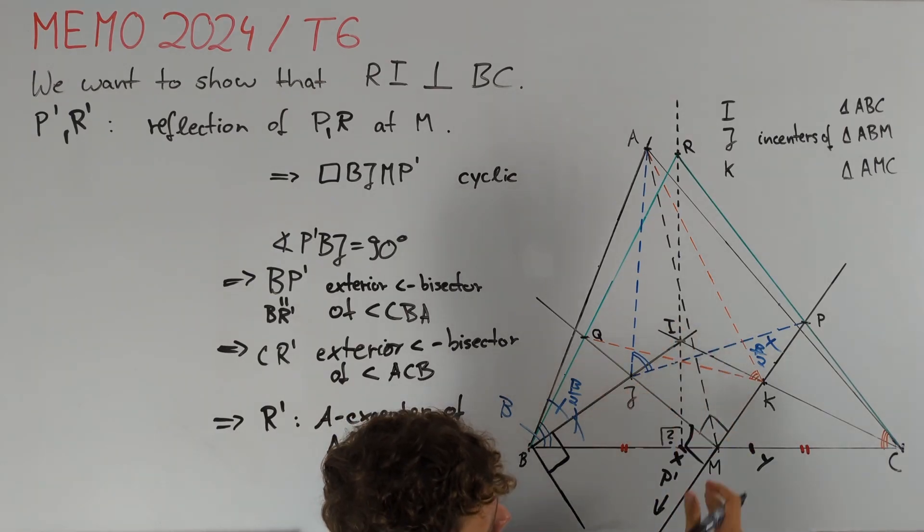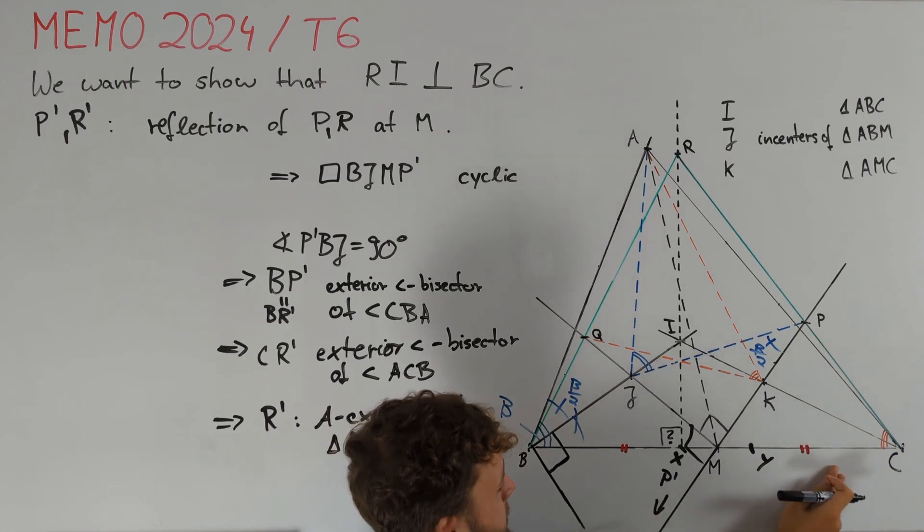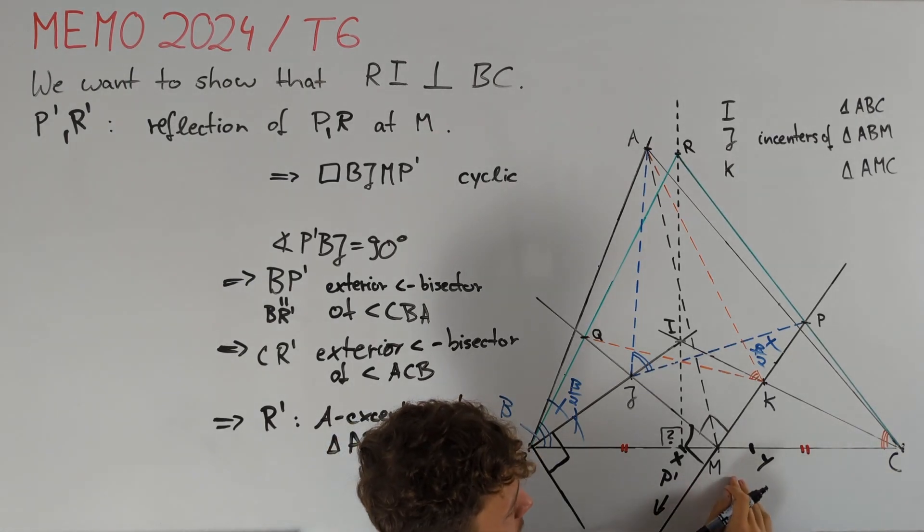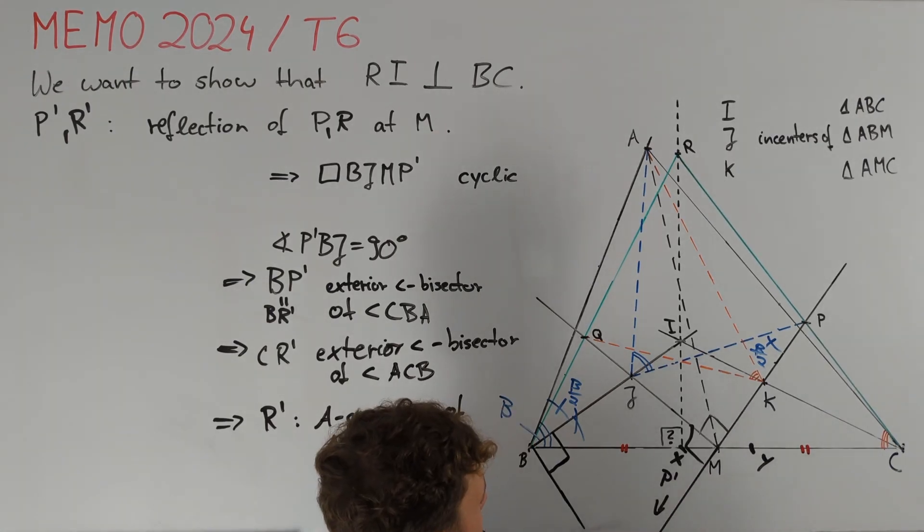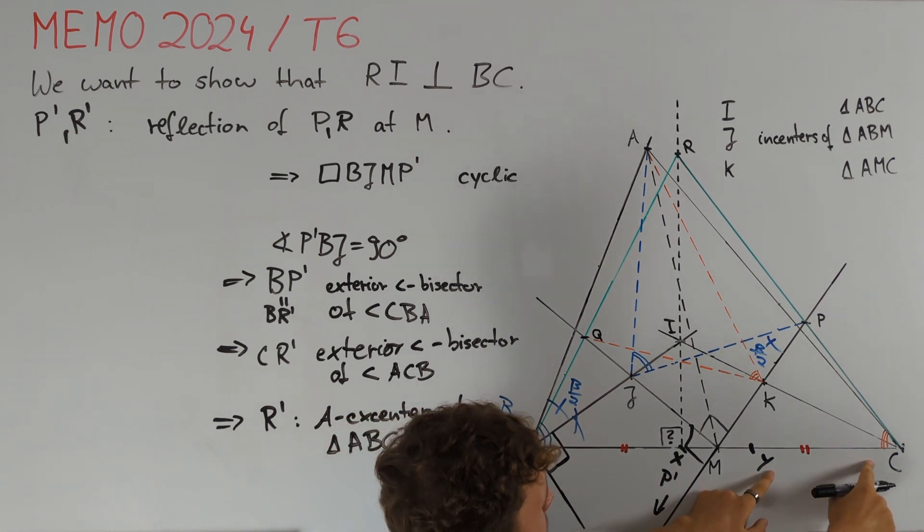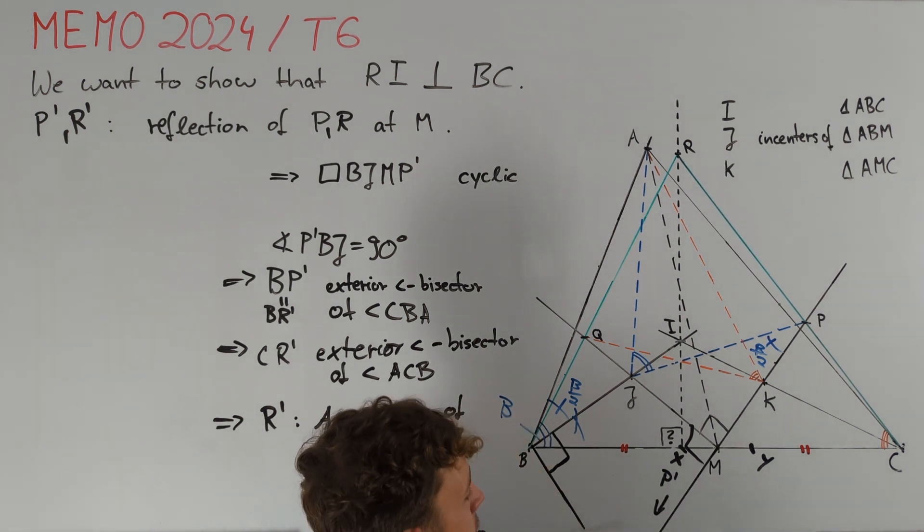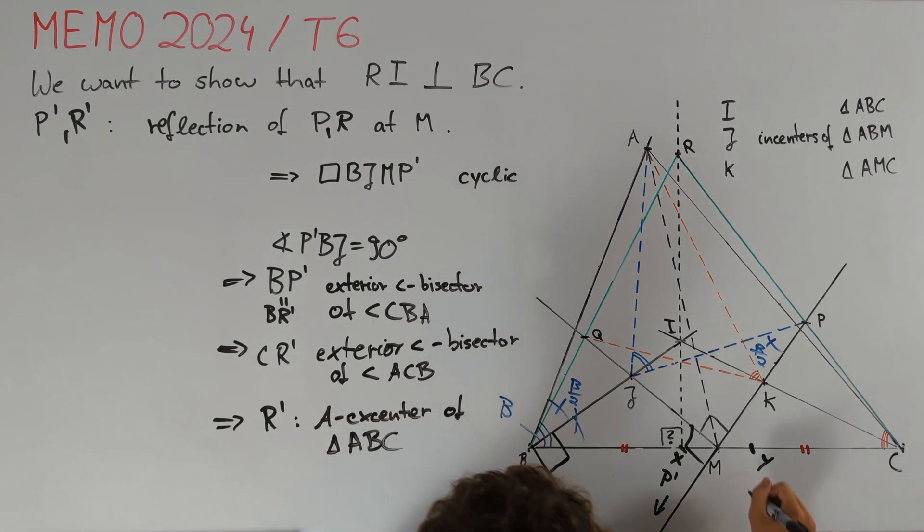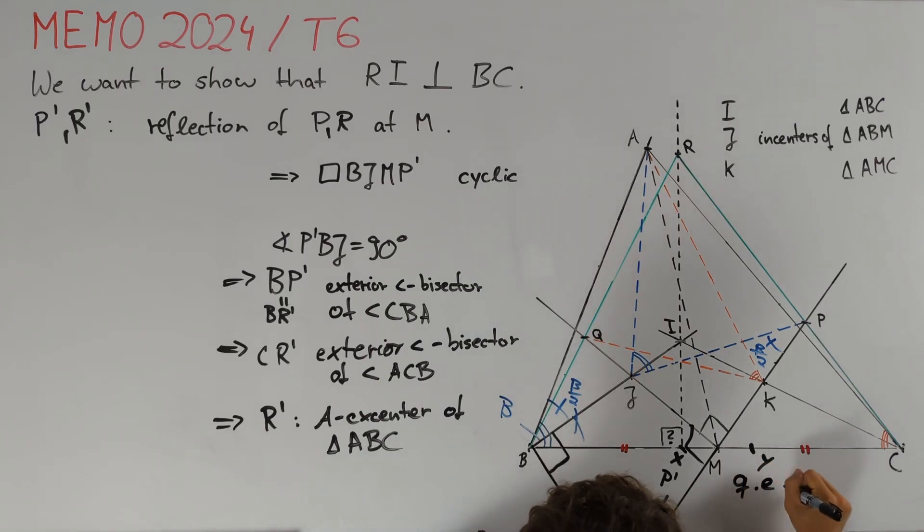It is well known that these two points are symmetric at M. We can prove this by showing that segments BX and CY are of the same length. And you can find the proof of this result in our wiki linked below. Therefore, I am done with my proof and wish you a nice day.